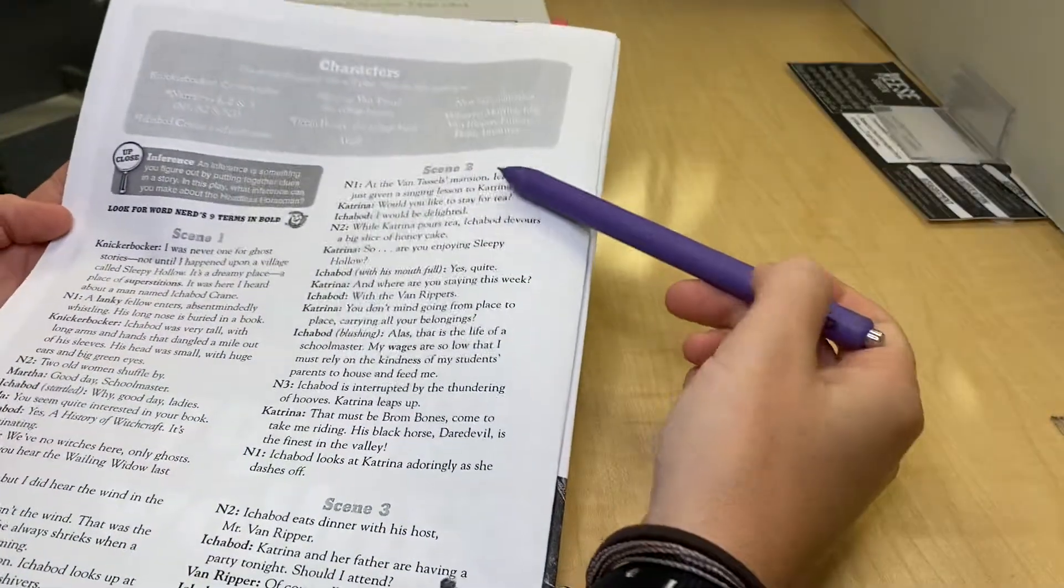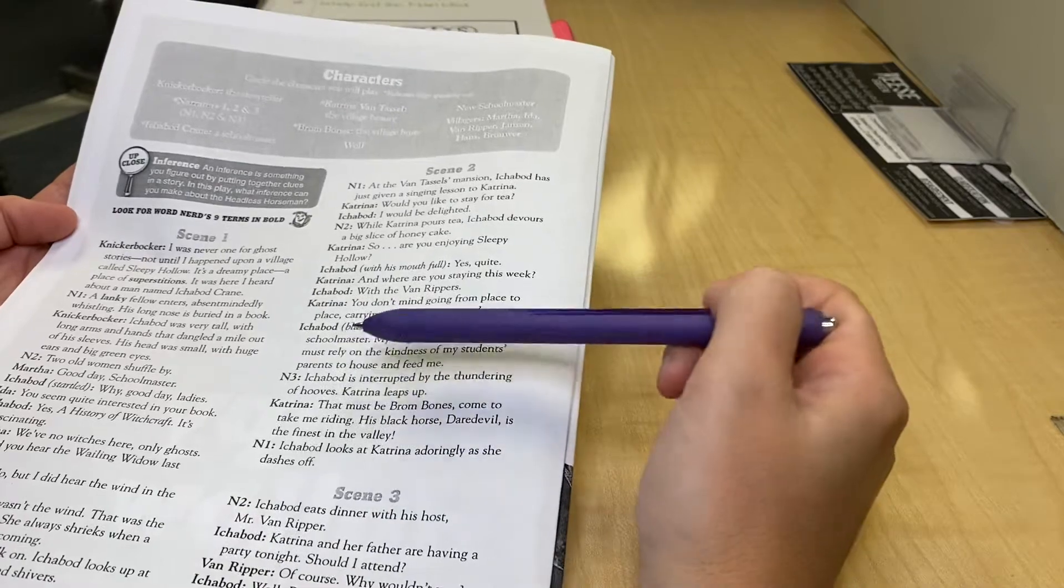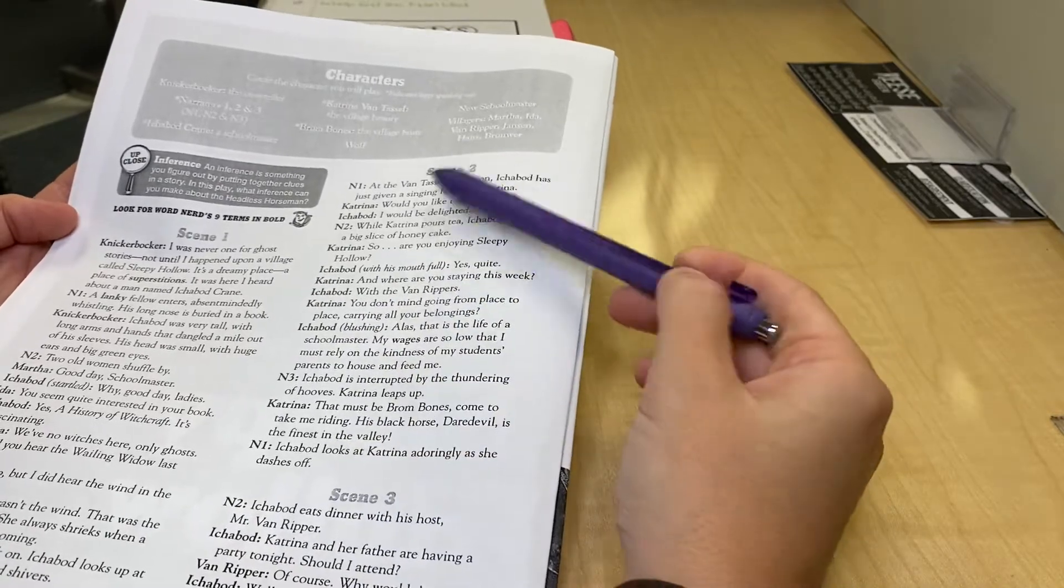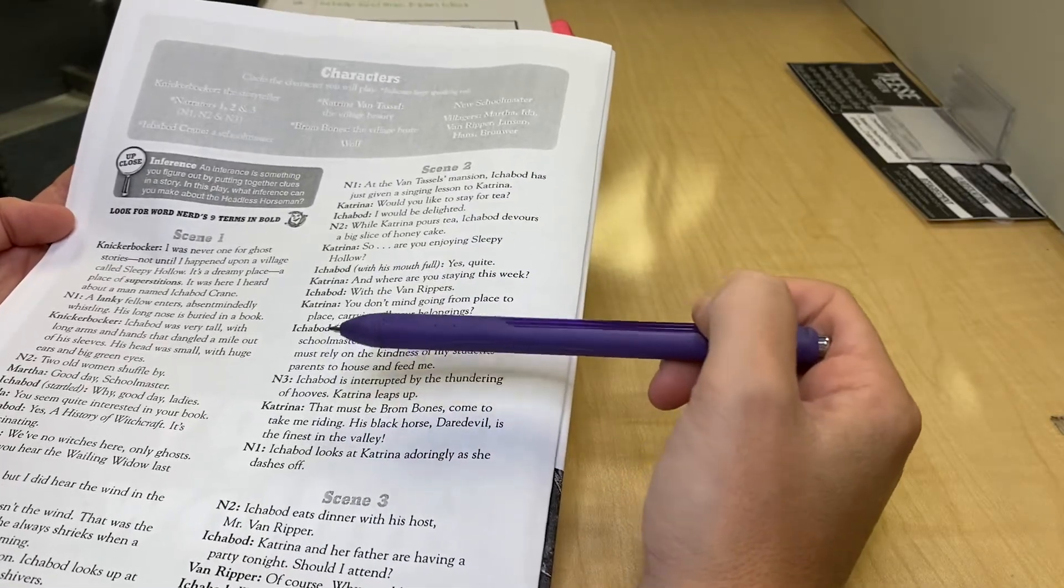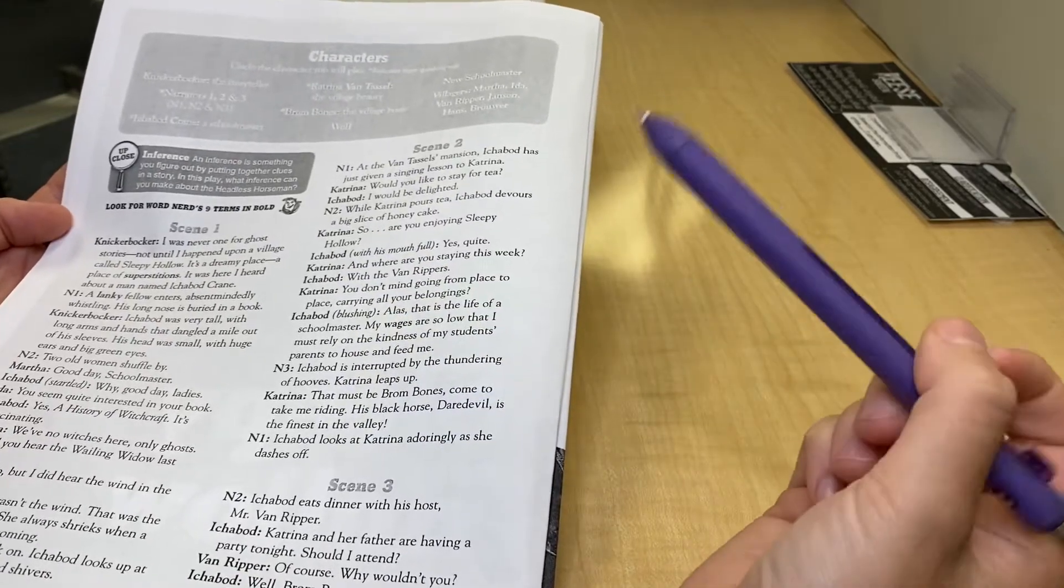We're going to take a look at scene two, since we did scene one together, and hopefully you remember the process of SNOTS. As you're reading, you're going to pinpoint either specific actions or things that the characters say to help identify character traits.